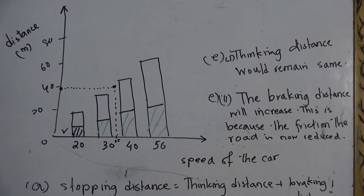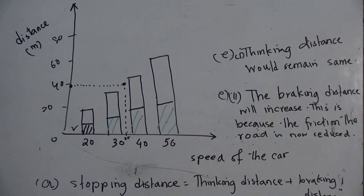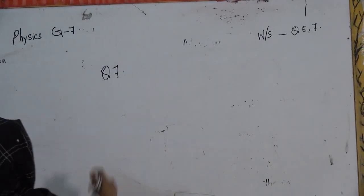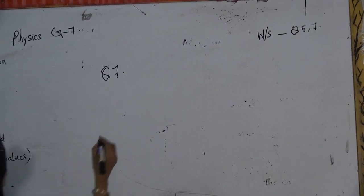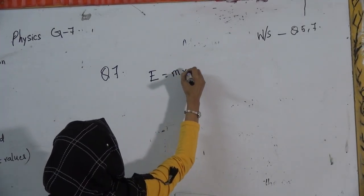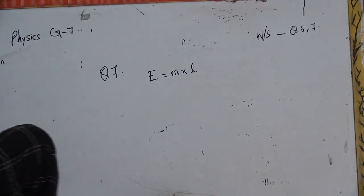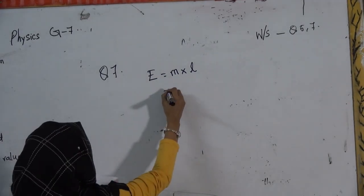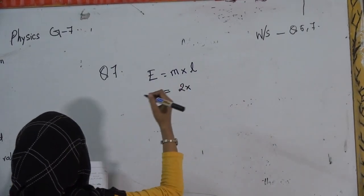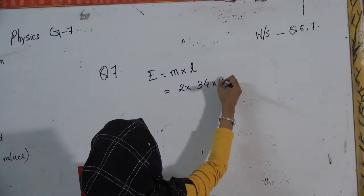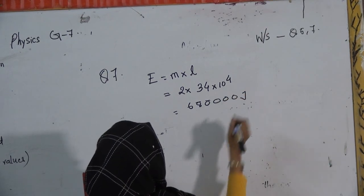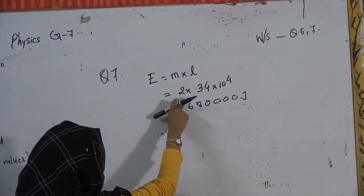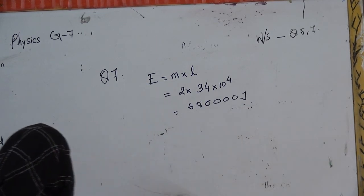I would like to solve this question for you now. Question seven from your worksheet. It is based on specific latent heat. They have asked you to find the energy to melt 2 kg of ice. We know that energy equals to mass into latent heat. This L would be latent heat of fusion since we are melting here. The mass given was 2 kg. And we know latent heat of fusion is 34 into 10 to the power 4. So we get 680,000 joules. Follow the steps. I have written the formula. And I have substitute the values. And I have got the answer. I have to write the unit with it.